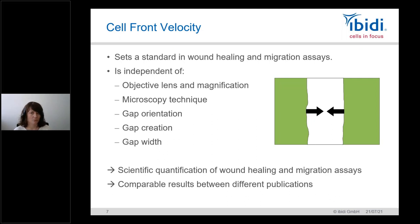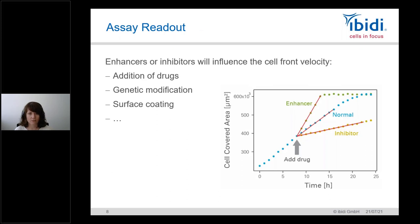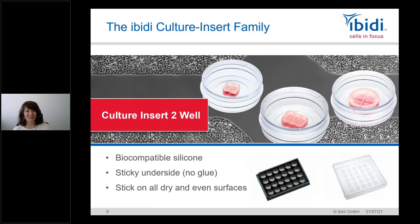Cell front velocity is the standard for wound healing and migration assays — it makes your results comparable to publications. It changes with any modifications to your assay, so when studying drugs or specific coatings, you'll see a changed cell front velocity. Now let me introduce the EBD culture inserts — a tool to perform such migration assays. We have them in two-well, three-well, or four-well formats, made from biocompatible silicone with a sticky underside, compatible with dishes and multi-well plates.